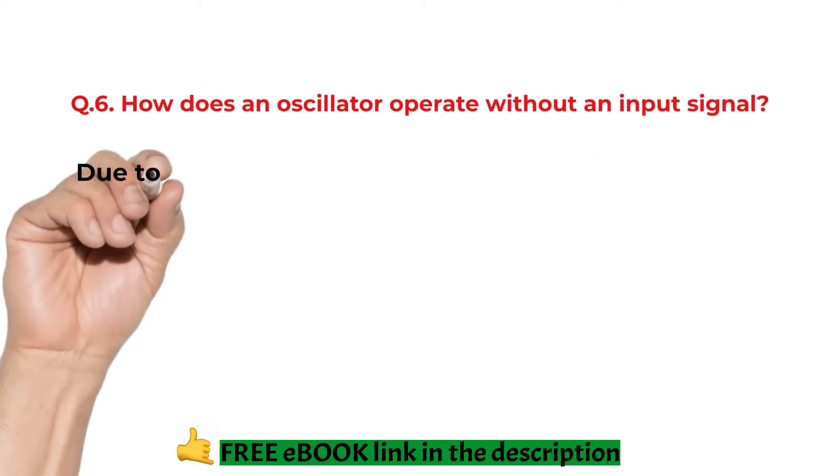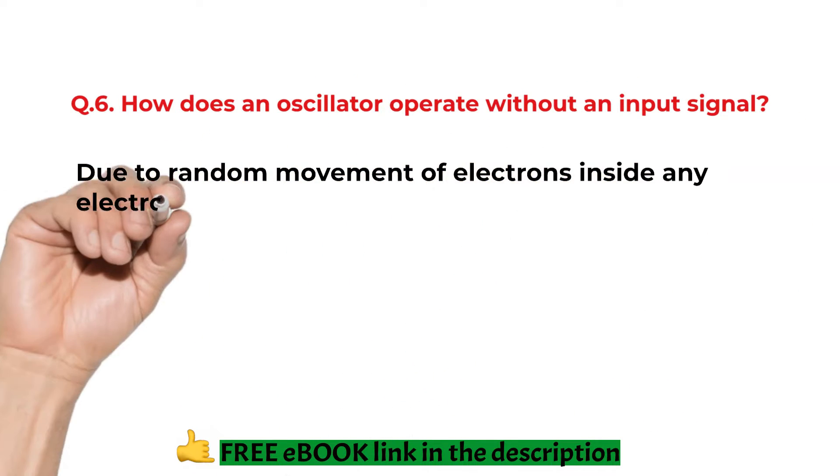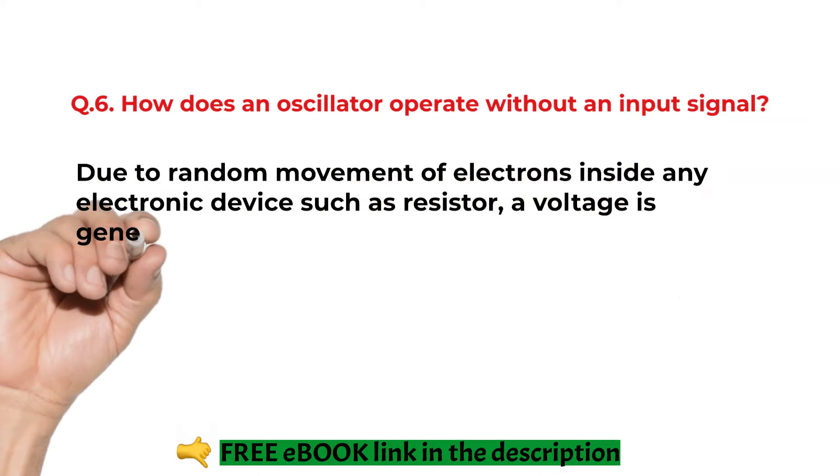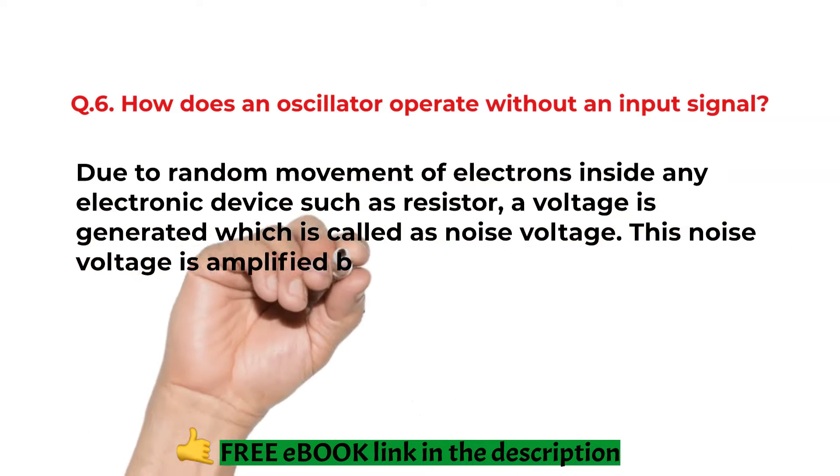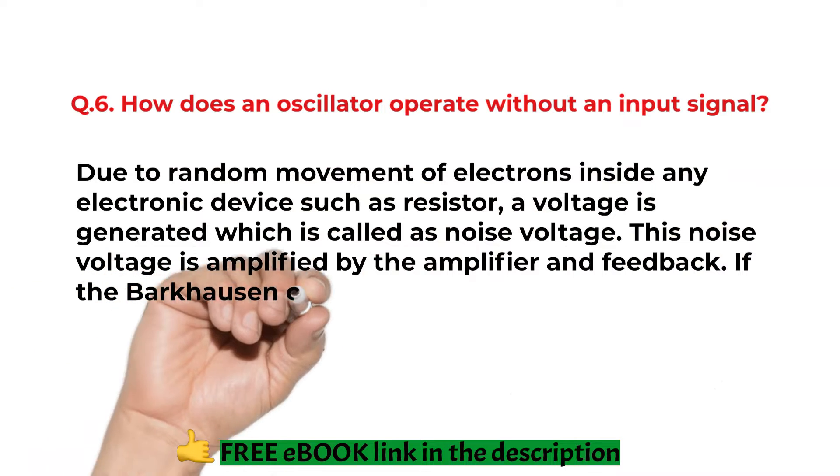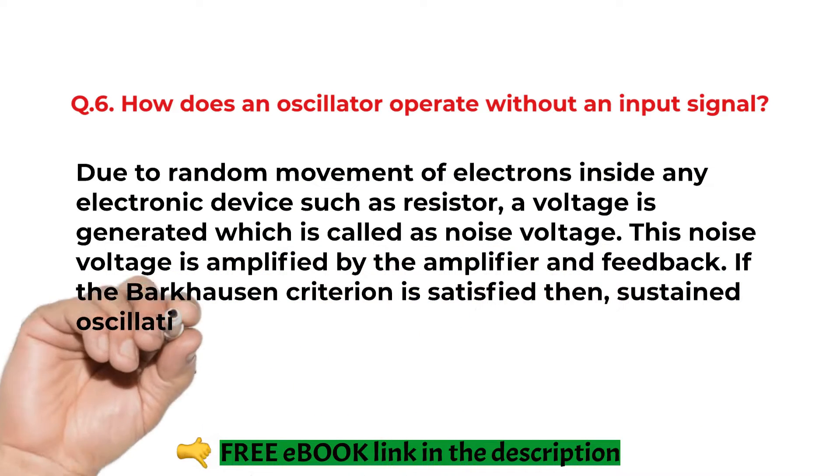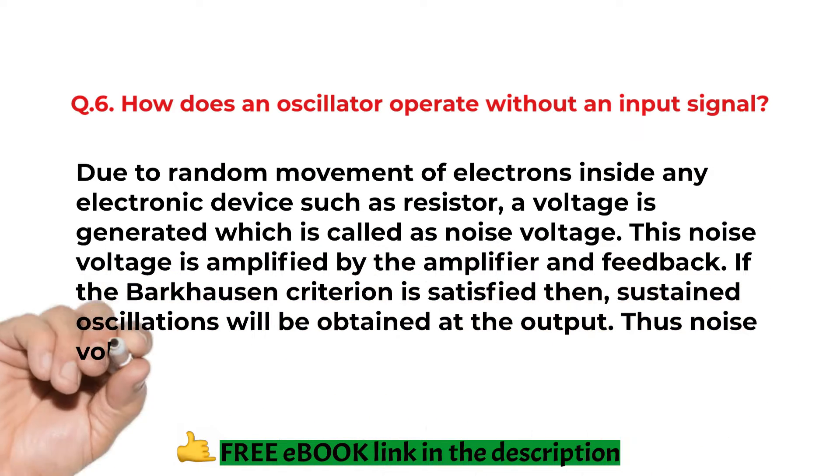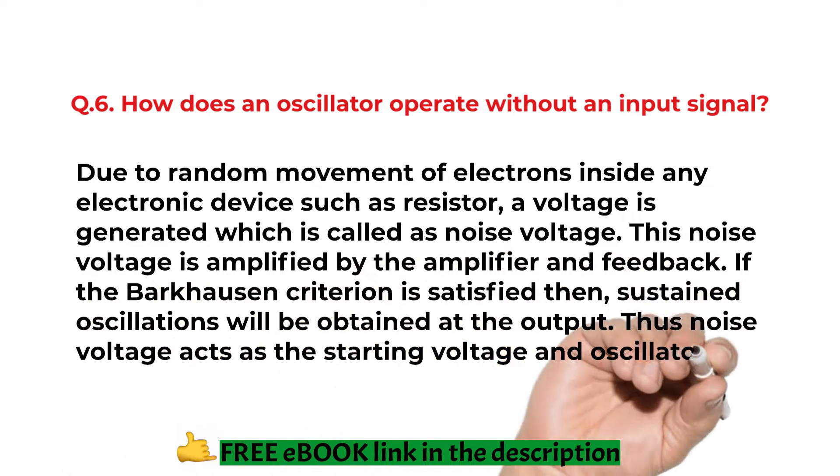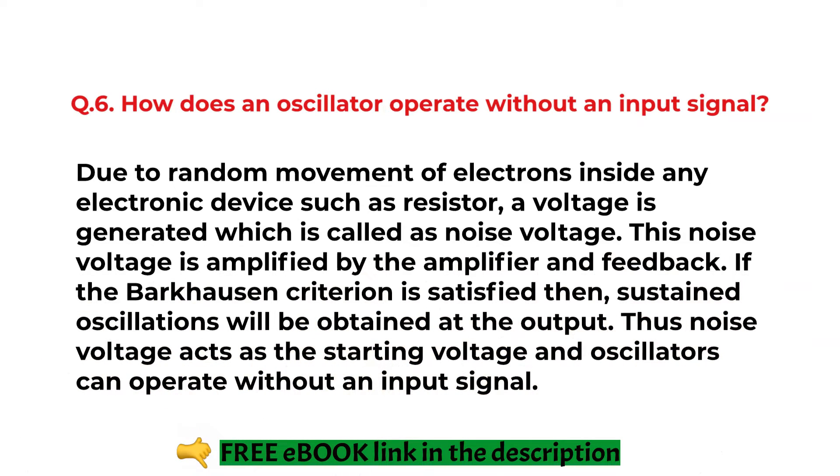How does an oscillator operate without an input signal? Due to random movement of electrons inside an electronic device such as resistor, a voltage is generated which is called as noise voltage. This noise voltage is amplified by the amplifier and feedback. If the Barkhausen criteria is satisfied, then sustained oscillations will be obtained at the output.